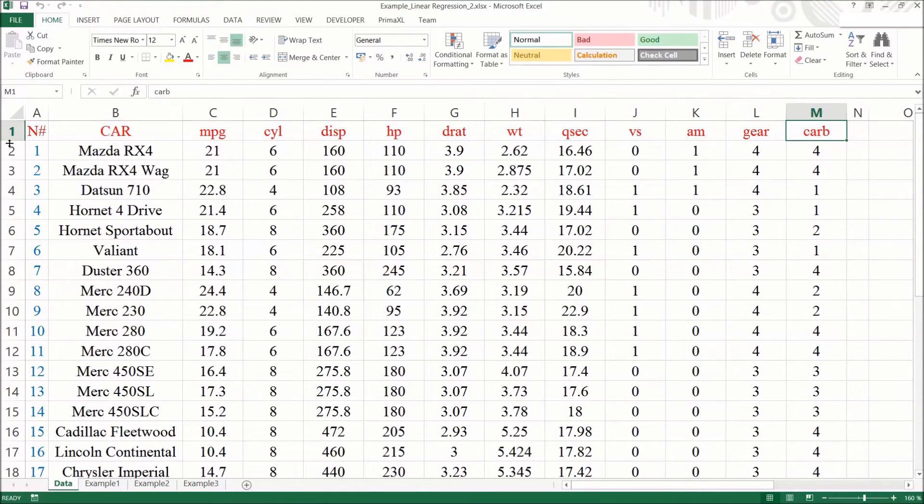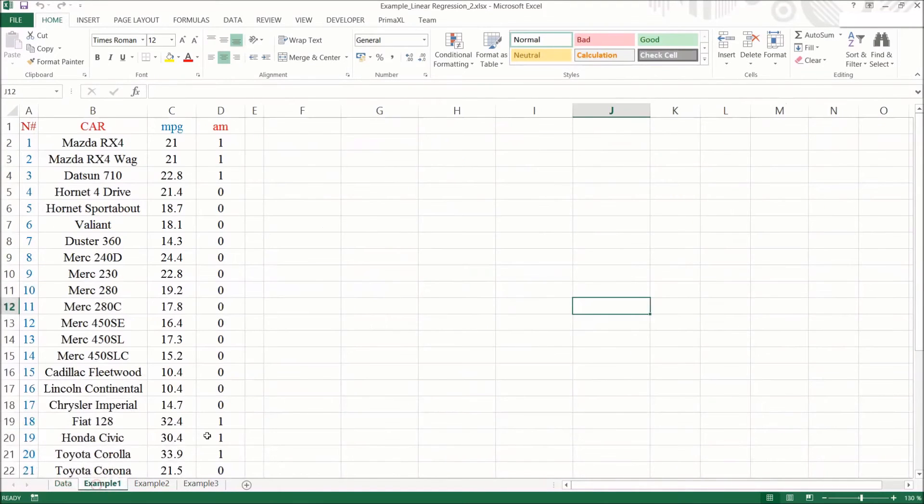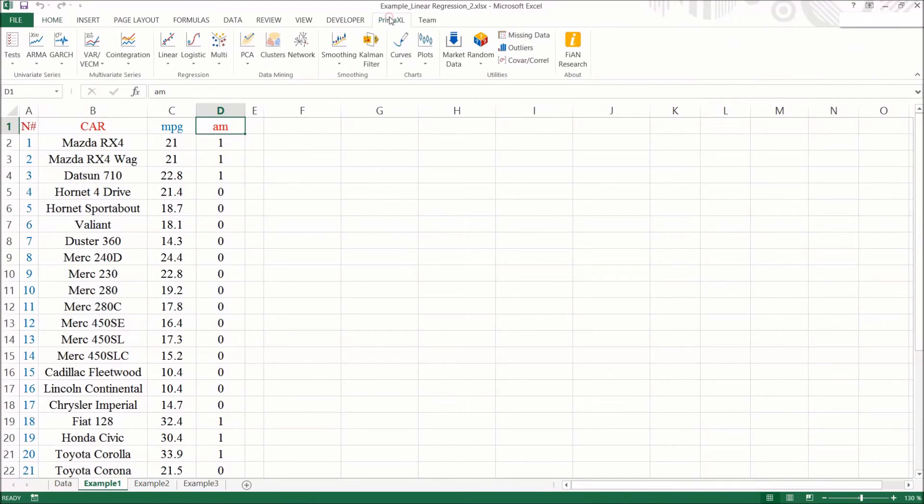Now, we switch to this new sheet which contains only those columns that we're going to use. We go to the Premium Excel tab. Select Linear and then Fit.